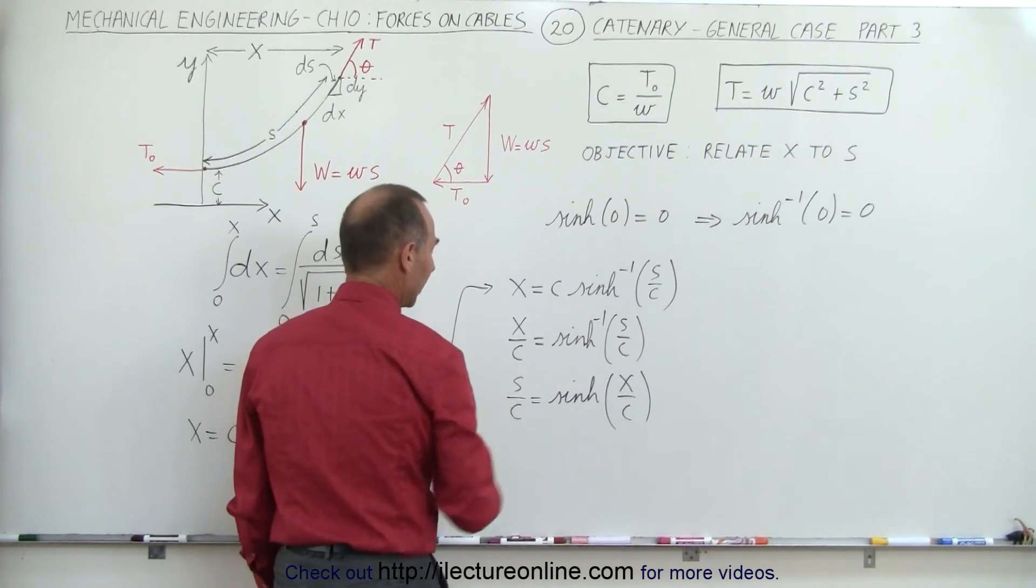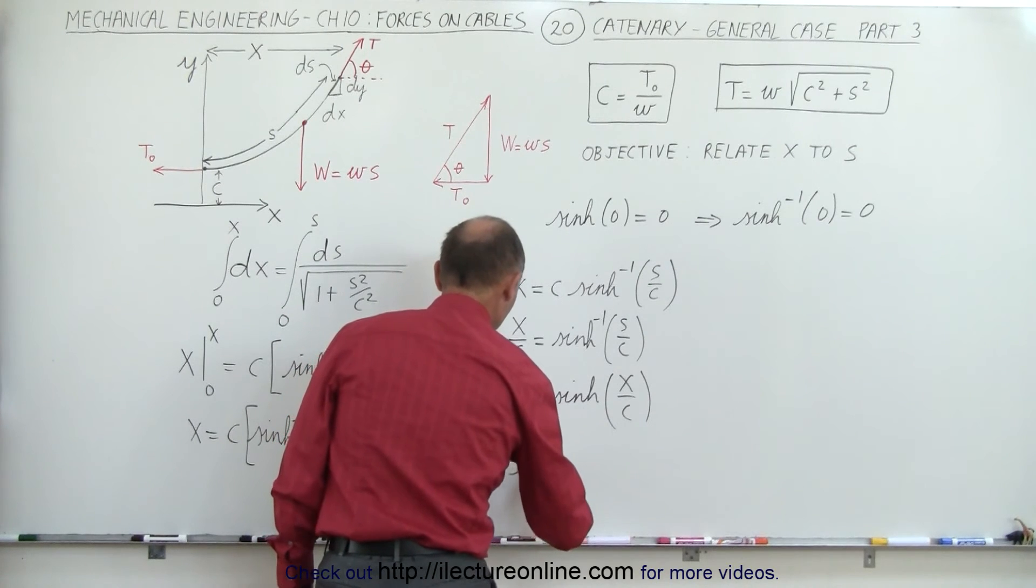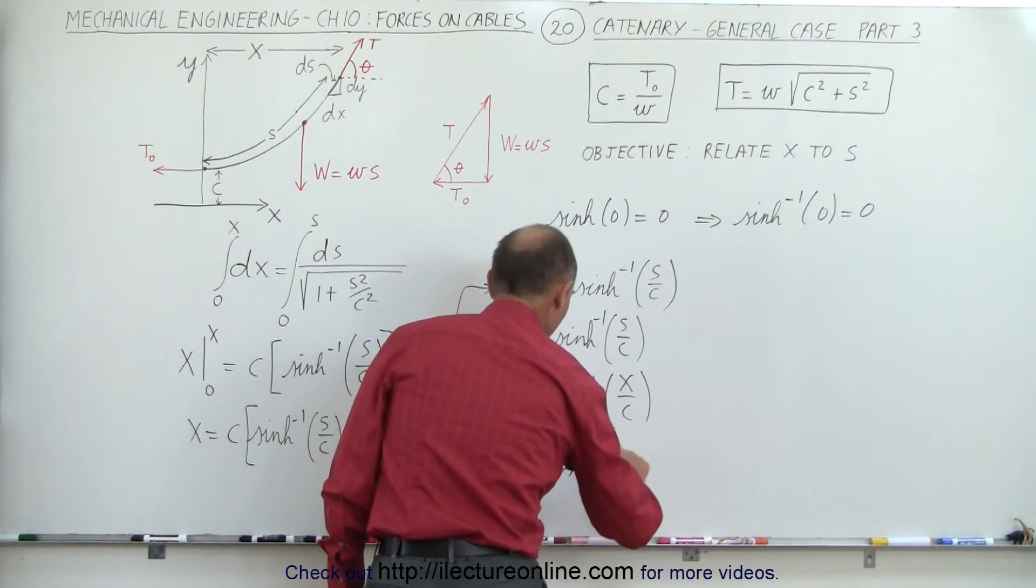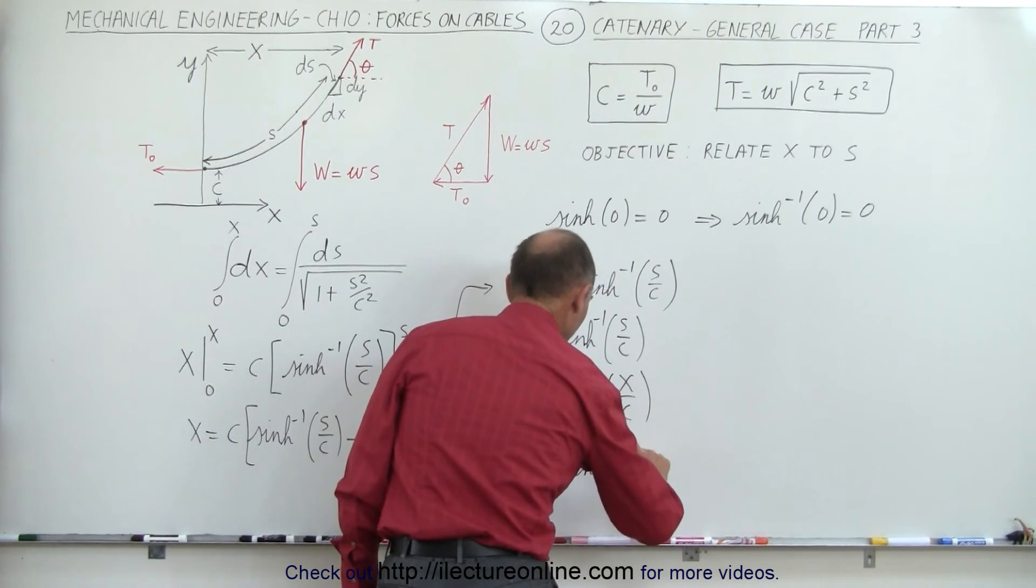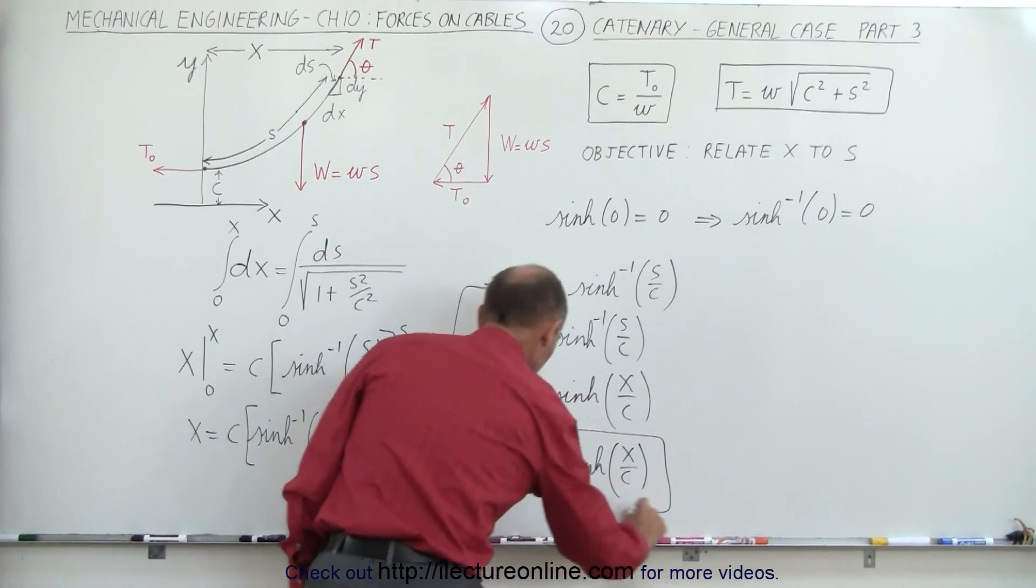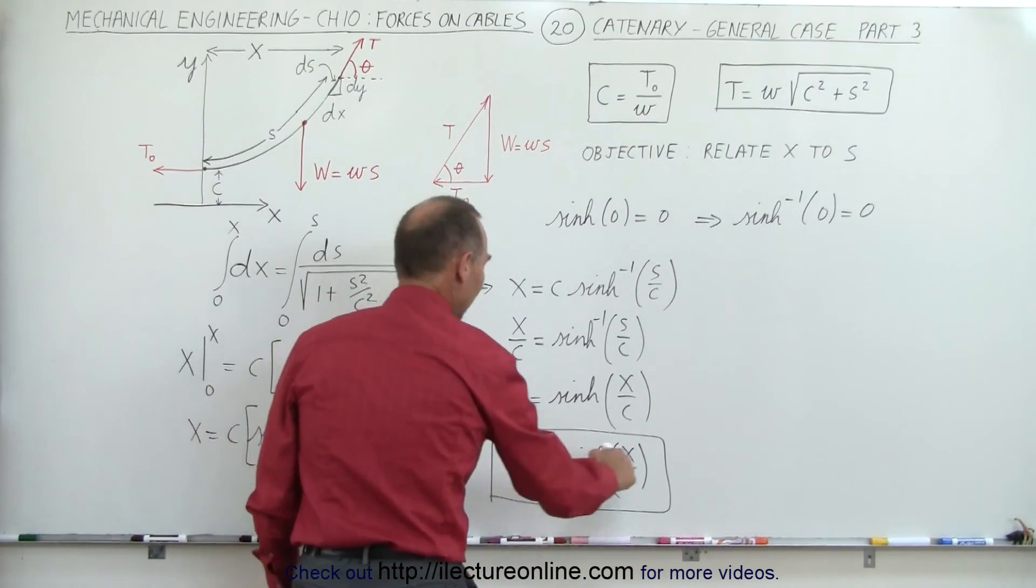Or if I now multiply this through I can say that s is equal to c times the hyperbolic sine of the ratio of x divided by c. And now we have our relationship between s and x.